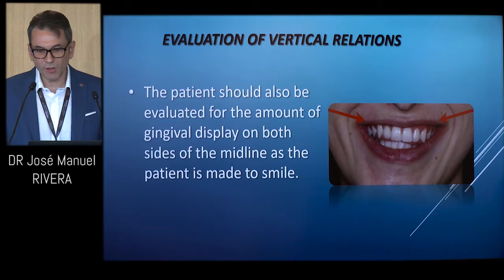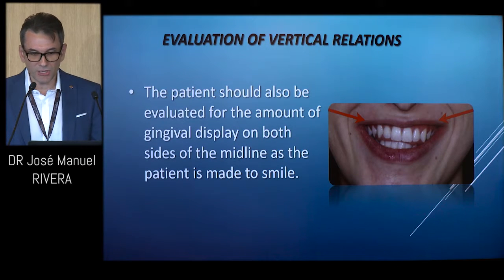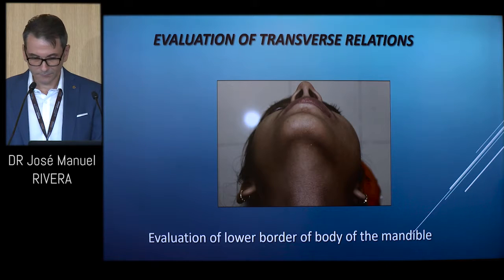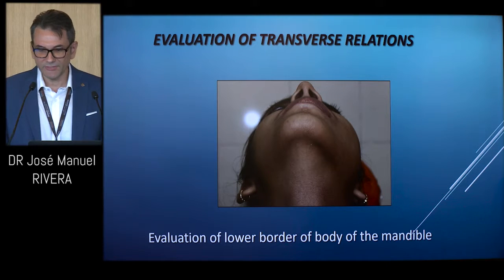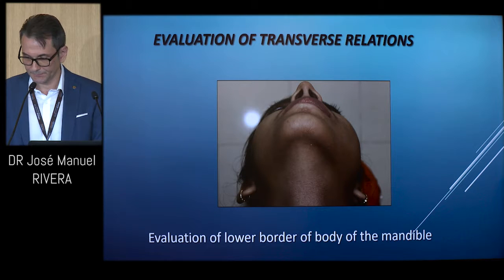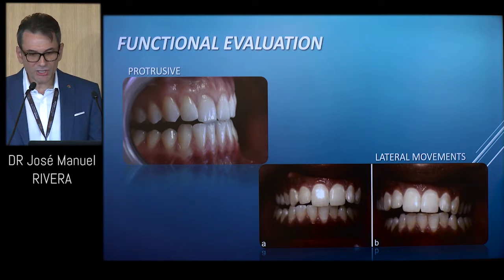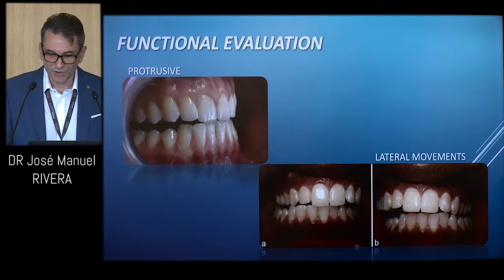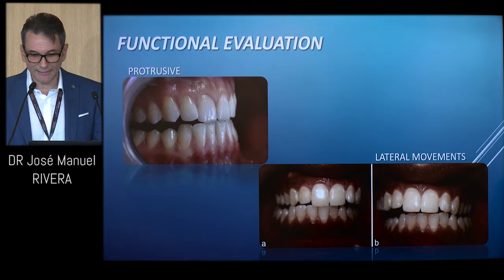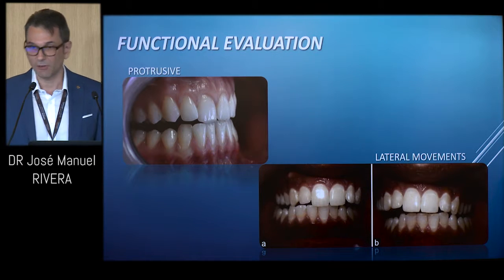The patient should be evaluated for the amount of gingival display on both sides of the midline as the patient is made to smile. The lower border of the body of the mandible should also be assessed for bilateral symmetry. The patient is made to perform various functional movements such as opening of the mouth, protrusive movements, and lateral movements, and any imbalance between the two sides is recorded. An accurate registration of the centric relation must also be made.